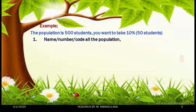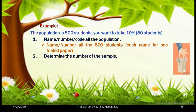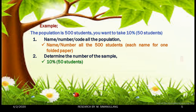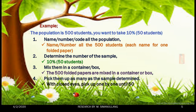That means 50 students will be our sample. By following the procedures, we need to name or code all the students — each name on one folded paper — and the 500 names will be mixed in a container or box. We will take 10% from the population, mix the 500 names, and then with closed eyes, pick up 50 students for the sample.